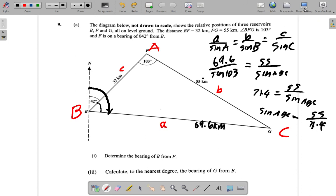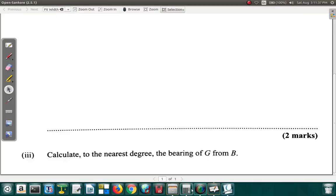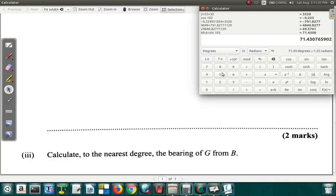So 55 over that answer—55 over this. It gives 0.77.